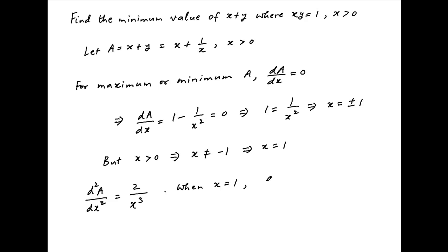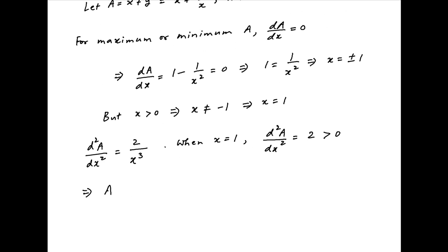Now when x is equal to 1, the second derivative of a with respect to x is equal to 2 upon 1, or 2, which is positive. Since the second derivative is positive, therefore a achieves a minimum.